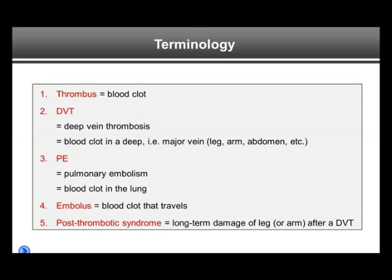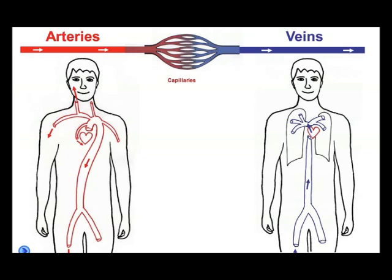Regarding the basics, I want to define a few words we will be using. A thrombus is a blood clot. A DVT, or deep vein thrombosis, is a blood clot in one of the deep veins — the major veins — typically in the leg or the arm, but can also be in the abdomen or the brain. Most DVTs occur in the leg. A PE is a pulmonary embolism, which is a blood clot in the lung. An embolus is a blood clot that has traveled, typically from the leg to the lung. And post-thrombotic syndrome is the term for long-term damage of the leg or possibly the arm after a DVT.